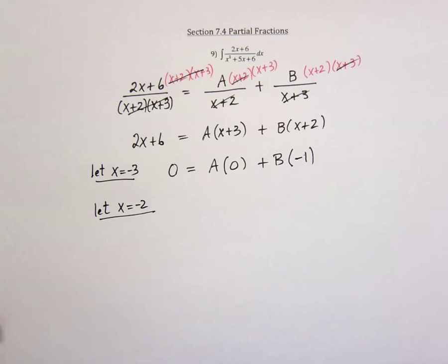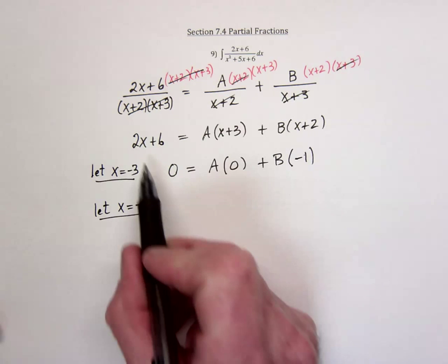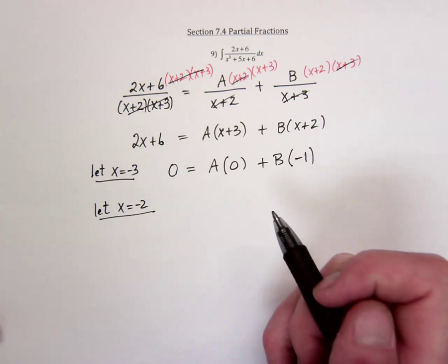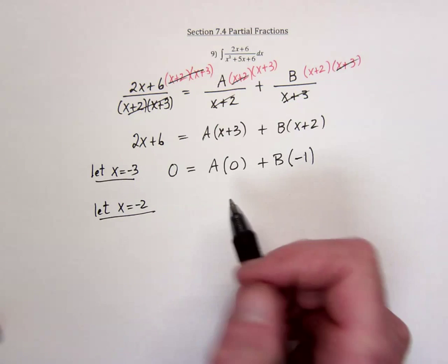Okay. Then, plug in another number so we can find out what A is supposed to equal. So if I use negative 2, this is going to be negative 4 and 6, so that is 2.